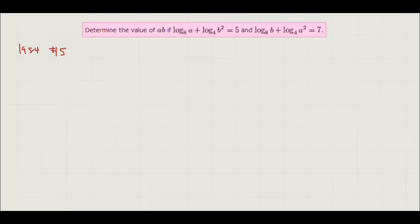Alright, so first off we notice that there are some different bases: base 8 and base 4. And we don't really like different bases because they're hard to work with. So we want to try to turn them into one constant base. But how do we do that?